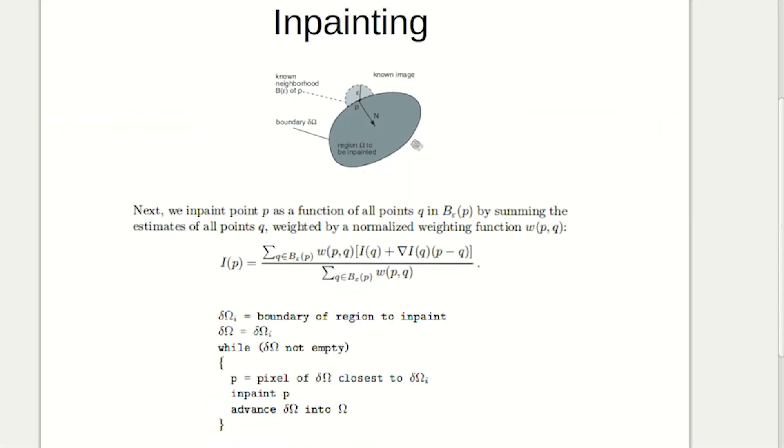First, we'll talk about the basic concept of inpainting. Here, this darker area is the region Omega to be inpainted. We need to inpaint the point P in the boundary, and we also take a small neighborhood B_epsilon of size epsilon. This region is primarily the known image around P.